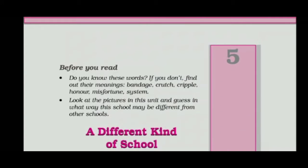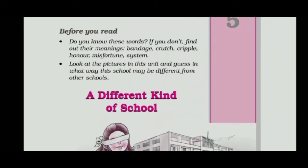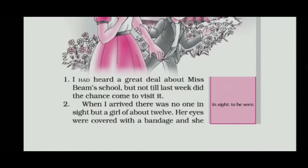Hi everyone, my name is Ishika Sharma and today we are going to study chapter number five of Classics English. The name of the chapter is 'A Different Kind of School.' Before you read, do you know these words? If you don't, find out their meanings: bandage, crutch, cripple, lame, misfortune, system. Look at the pictures in this unit and guess in what way this school may be different from other schools.